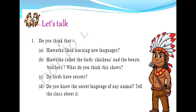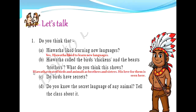Our next textual exercise is 'Let's Talk.' There are four points to discuss. You do not have to write anything in your notebooks. The first question is: Do you think Hiawatha liked learning new languages? Hiawatha loved to learn new languages — that is why he could learn the languages of birds as well as animals. Next: Hiawatha calls the birds chickens and the bees brothers — what does this show? Hiawatha loved birds and animals dearly and treated them as brothers and sisters. His love for them is seen here.